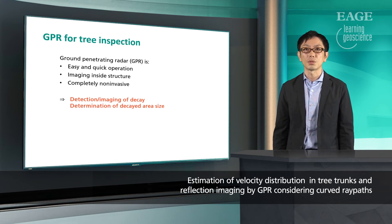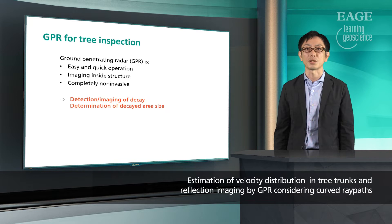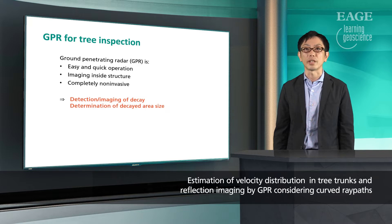One of our tools for the tree inspection is ground penetrating radar. Because it is easy and quick, it's capable of imaging inside the structure of tree trunk and completely non-invasive. So we try to detect and image decay in tree trunk and to determine the size of decayed area.